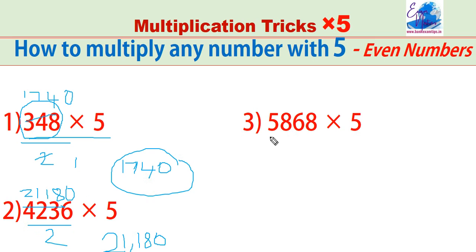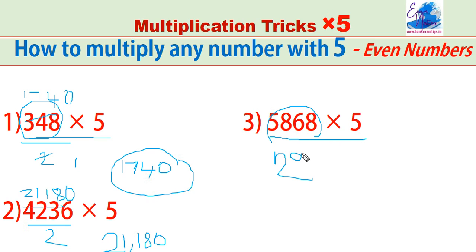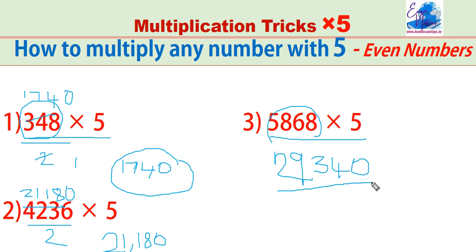See one more. 5,868 into 5. First make it half: 2934. And put 0 at the end. The answer is 29,340.